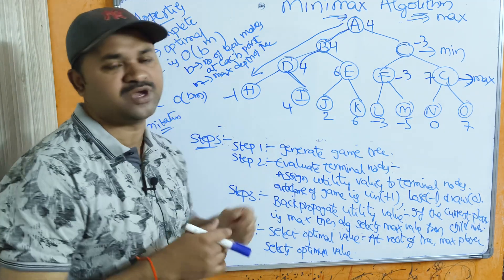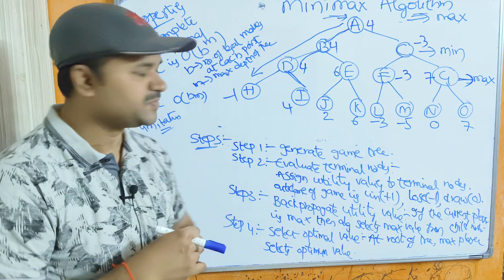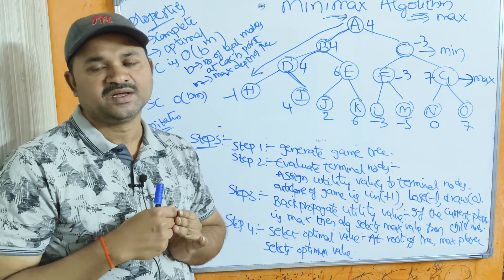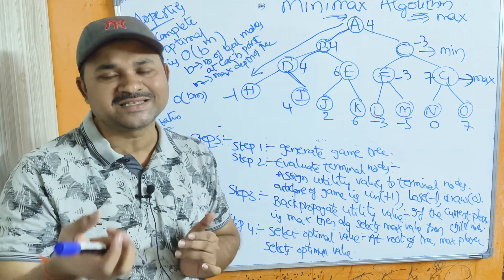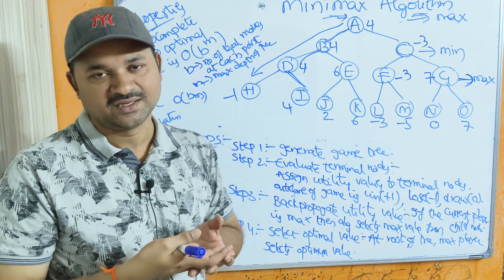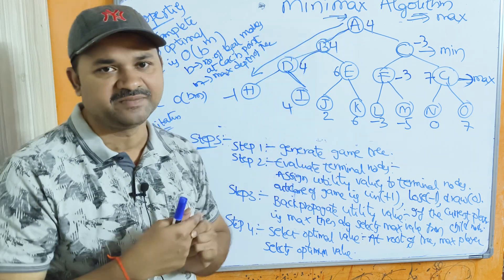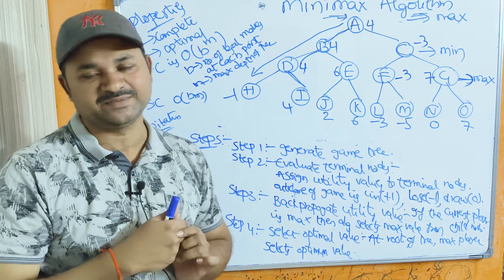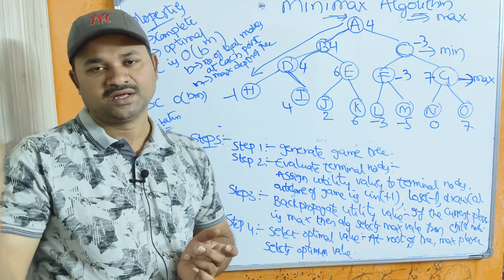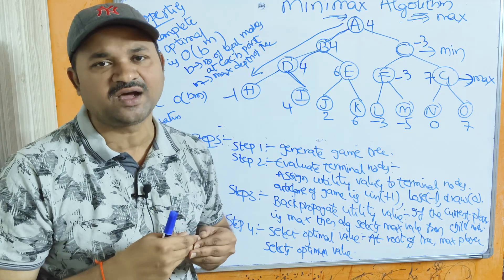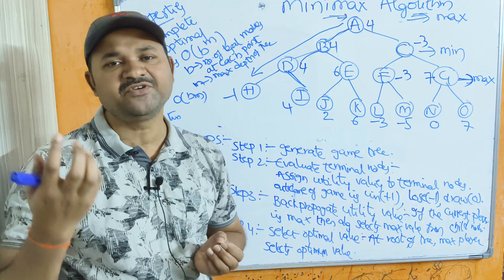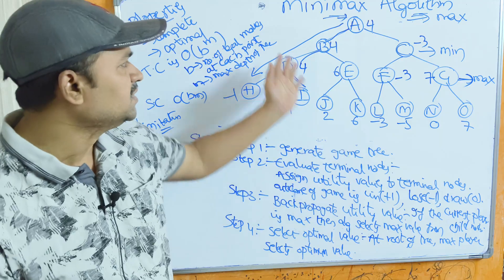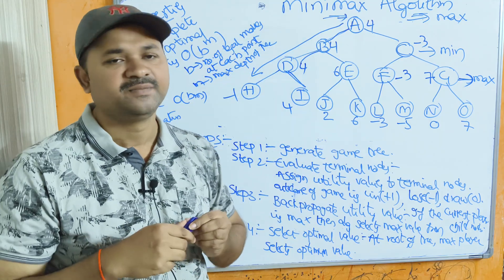The space complexity of Minimax is O(b × m). A key limitation is that it is very slow for complex games like chess. To overcome this limitation, we use the Alpha-Beta Pruning algorithm, which will be discussed in the next video. Alpha-Beta Pruning is mainly useful to overcome the limitations of the Minimax algorithm.